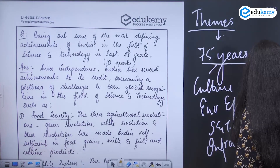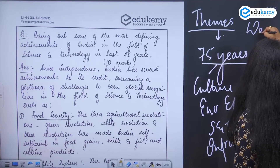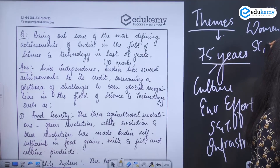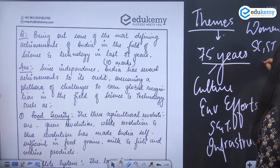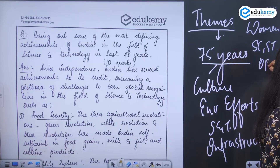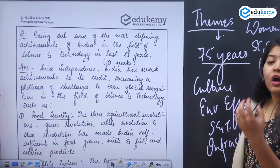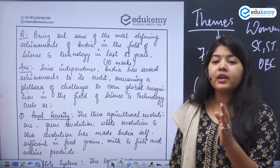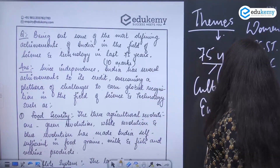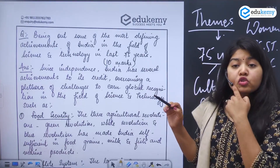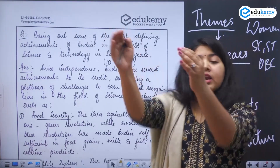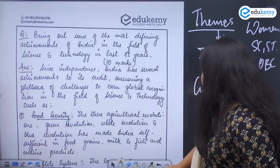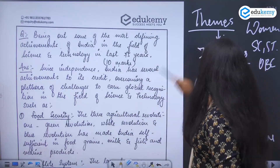Other themes include infrastructure, status of women, status of SC/ST and OBC, and status of the disabled. The question can be anything — the idea around 75 years is that you should have a list of important achievements across different topics.